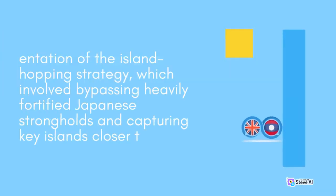This victory also paved the way for the implementation of the Island Hopping Strategy, which involved bypassing heavily fortified Japanese strongholds and capturing key islands closer to Japan.